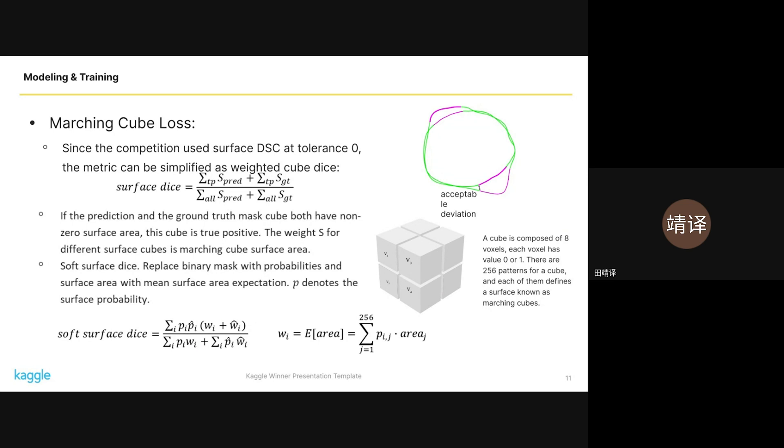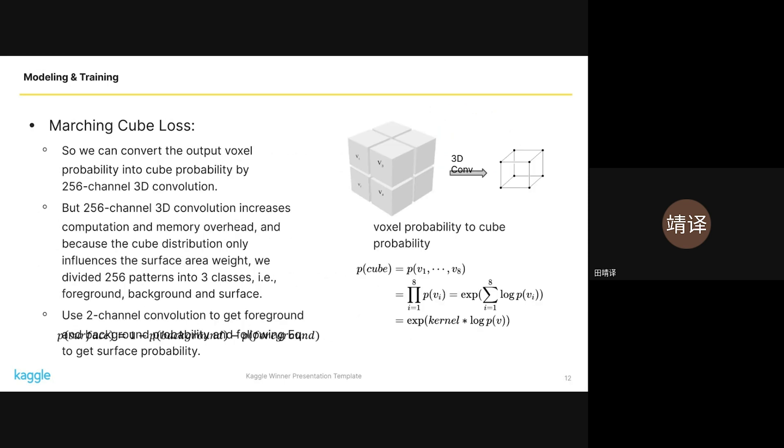Inspired by the fast surface dice computation, we designed a customized Marching Cube loss. Given the computation's focus on surface dice and tolerance 0, the metric can be simplified as weighted cube dice. The metric considers a cube composed of 8 voxels and analyzes its surface by evaluating 256 potential patterns. Each pattern corresponds to a specific surface. If the prediction and the ground truth mask cube both have non-zero surface area, this cube is true positive. The weight accounts for different surface cubes with Marching Cube surface area. By replacing binary mask with probabilities and surface area with mean surface area expectation, we can have a soft version of surface dice.